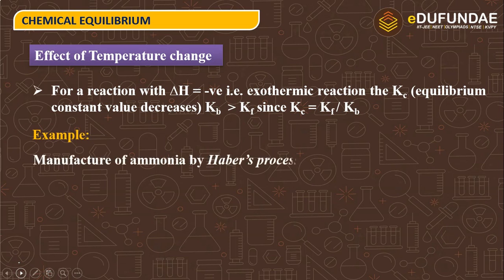Example: Manufacture of ammonia by Haber's process. N2 plus 3H2 reversible 2NH3, delta H equals minus 92.38 kJ.